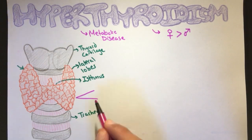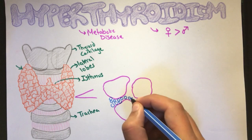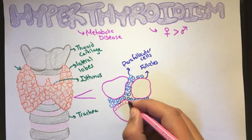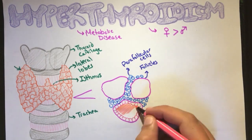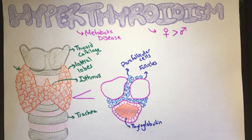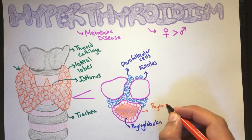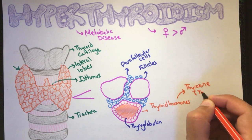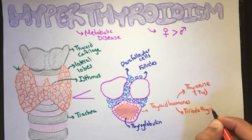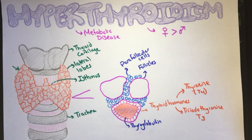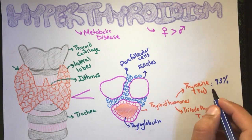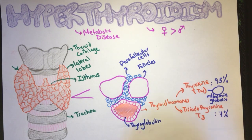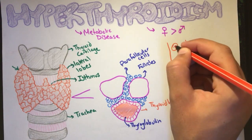The thyroid gland is made up of follicles and parafollicular cells. These follicles are lined by cuboidal to columnar cells filled with thyroglobulin. These cells are responsible for the production of thyroid hormones, which are of two types. The first is thyroxine T4 and the second is triiodothyronine T3. Normally, T4, which is 93% of thyroid hormones, is found in the blood bound to proteins such as globulin and albumin, while T3, only 7%, is free in the blood.